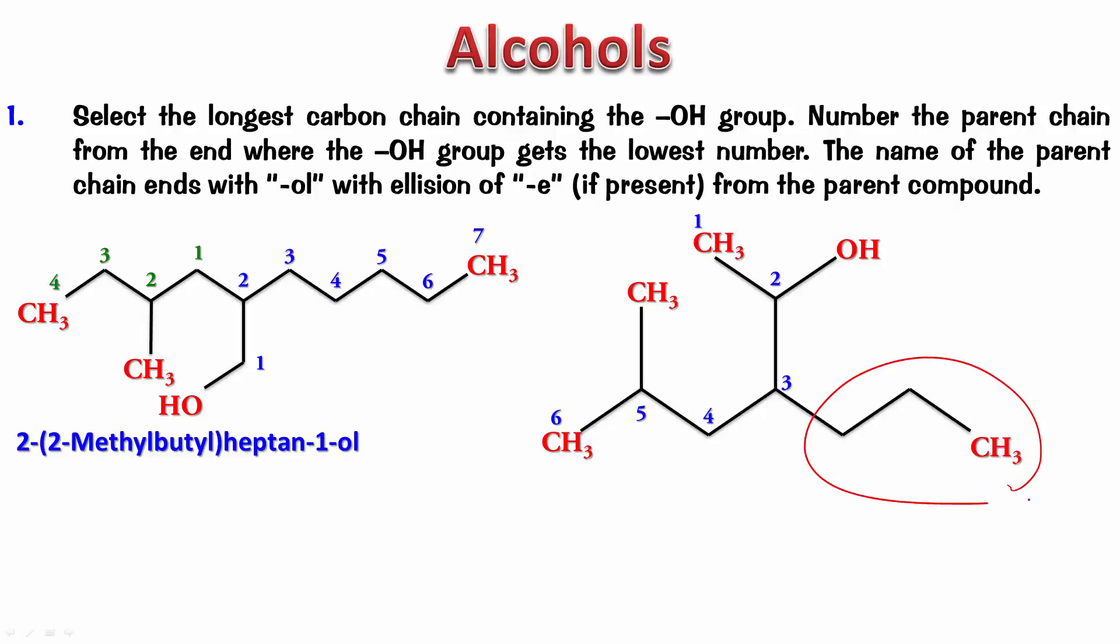This side chain is propyl. This side chain is methyl. Methyl comes before propyl alphabetically. So it's 5-methyl-3-propylhexan-2-ol. That's the name of this particular compound.